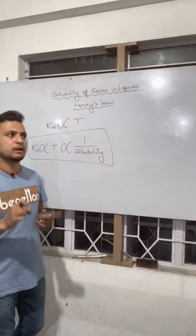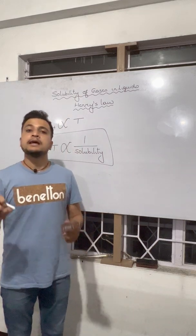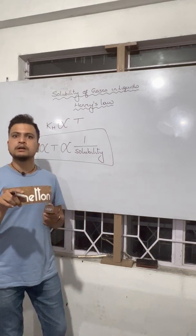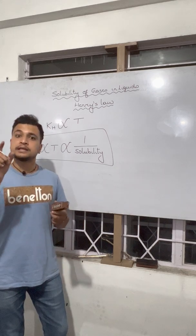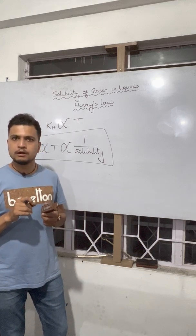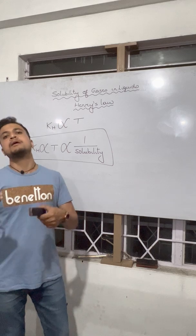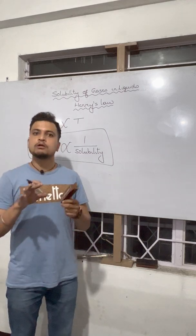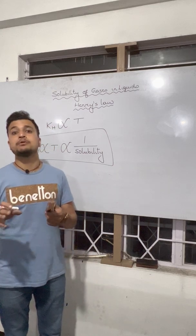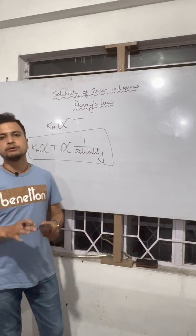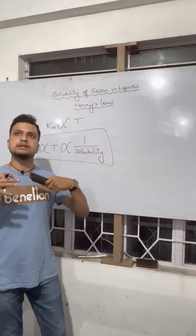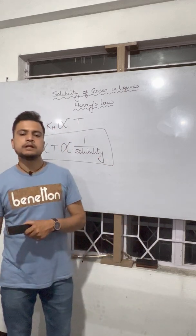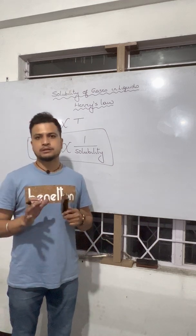That is why aquatic species are more comfortable in cold water rather than in warm waters. Cold water means temperature is low; when temperature is low, the KH value of oxygen will be lower; and when KH is lower, the solubility will become higher. At a lower temperature, more oxygen will be available, and as a result the aquatic species will be more comfortable. That is how you can understand Henry's law, its mathematical expression, and the variation of pressure, temperature, and solubility.